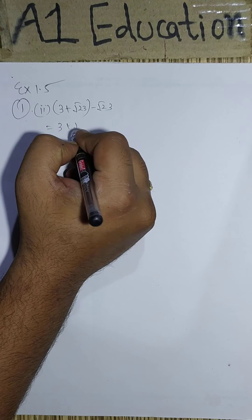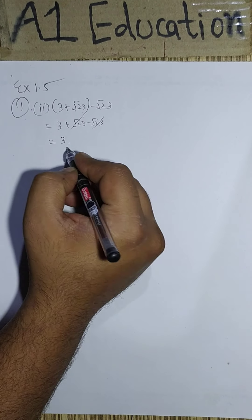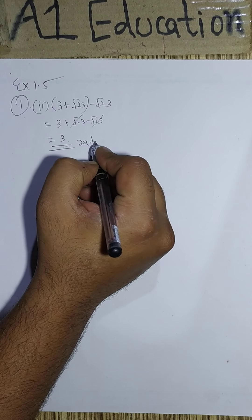If we simplify this, the square root term gets cancelled out and we get completely a natural number, integer. Hence, this is a rational number.